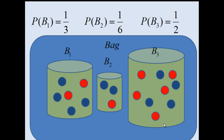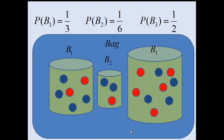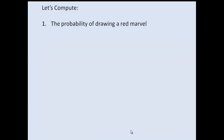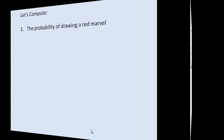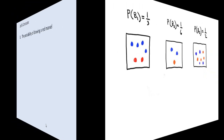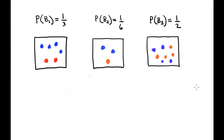This is a sketch to understand the situation. Now, the first question is: the probability of drawing a red marble. Now we solve the problem.